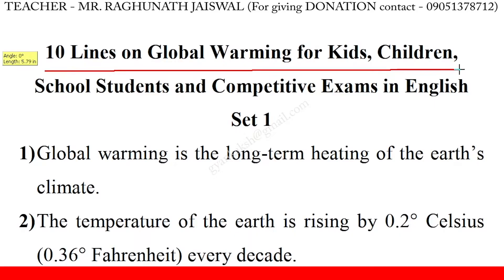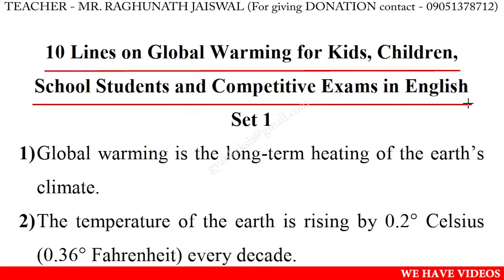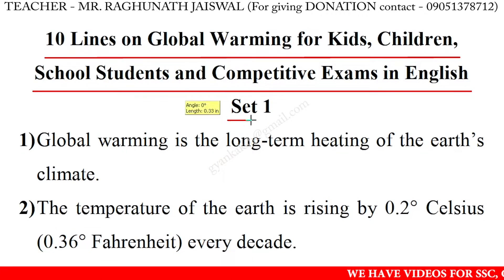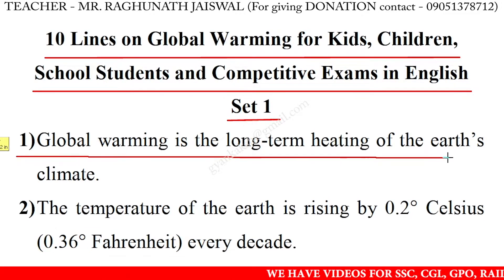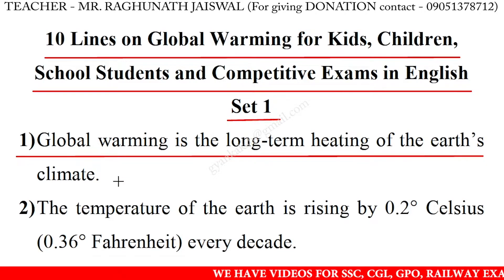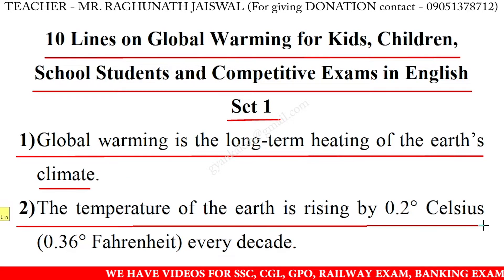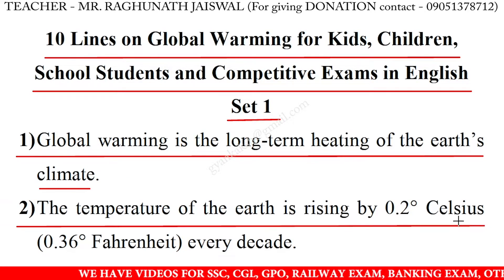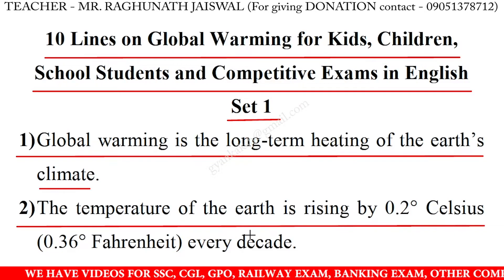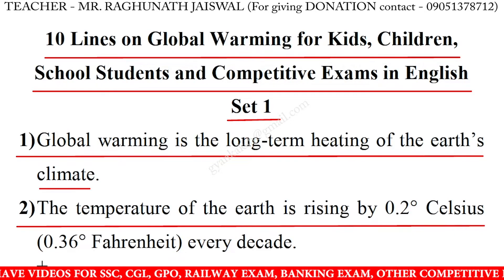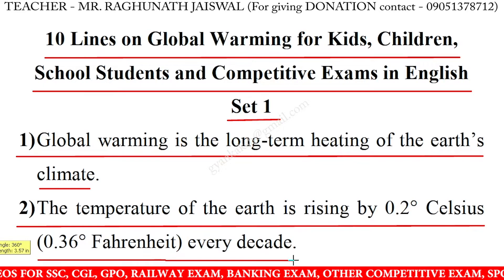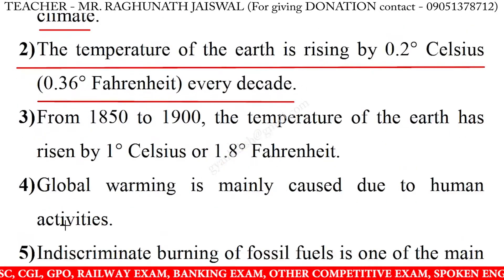10 Lines on Global Warming for Kids, Children, School Students and Competitive Exams in English, Set 1. Global warming is the long-term heating of the Earth's climate. The temperature of the Earth is rising by 0.2 degrees Celsius or 0.36 degrees Fahrenheit every decade.